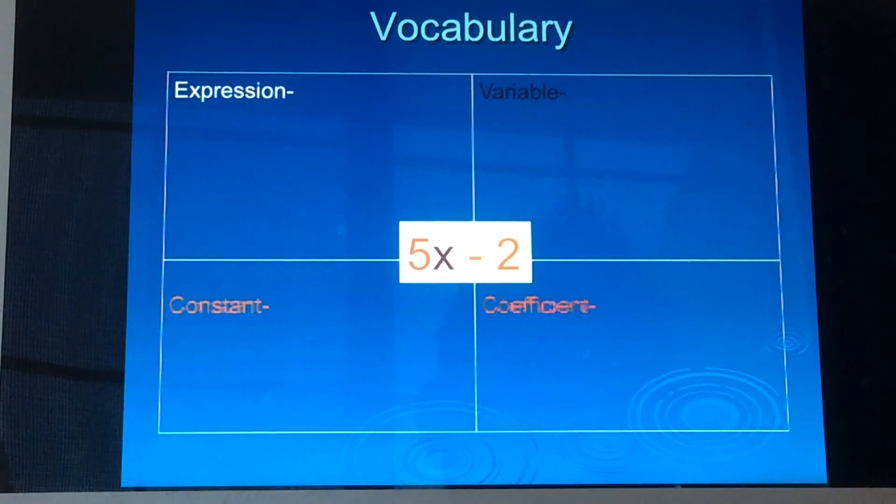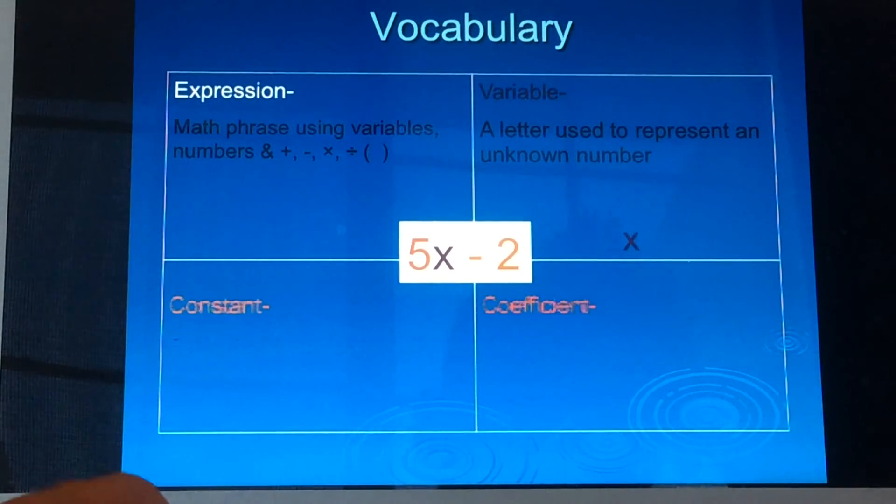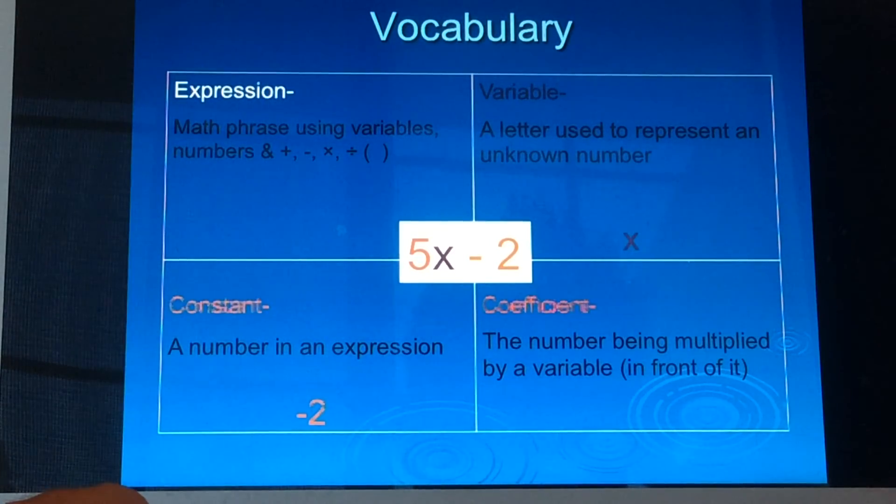As you can see, the expression, variable, constant, and coefficient are all the same terms. And the expression is the same. So there's your definition for expression. There's your definition for variable. There's an example of your variable. There's the definition for constant, a number in expression. There is the example, negative 2 was the constant. And there's the definition for coefficient, the number being multiplied by a variable. Okay. And the coefficient in this example was 5. So just another way to look at it. And hopefully one of these two ways works for you.